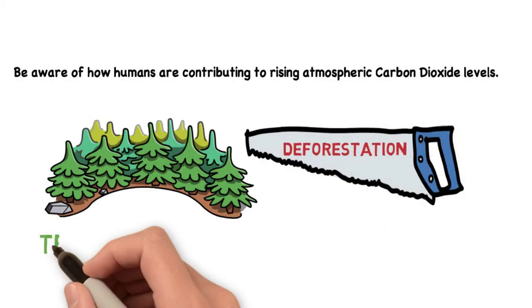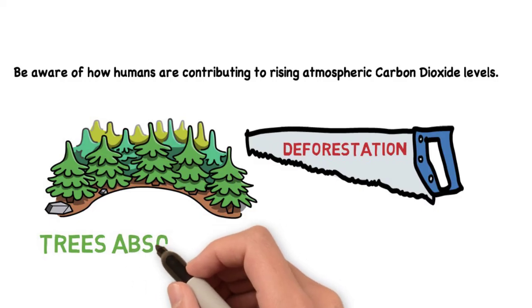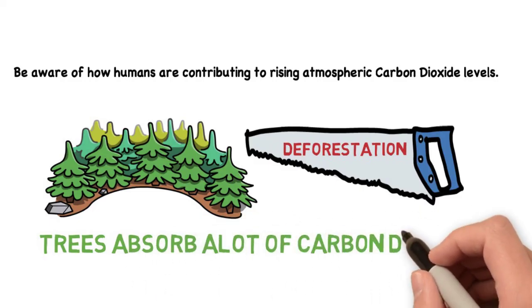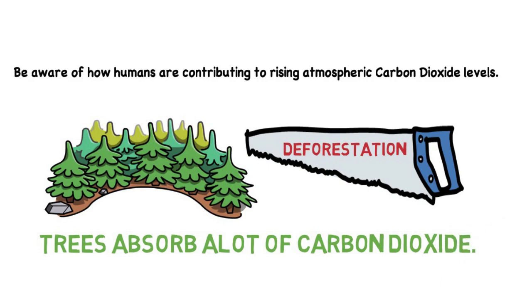So when you cut down trees, remember trees absorb a lot of CO2 for photosynthesis. If you remove the trees, you will leave a lot of CO2 carbon dioxide in the atmosphere.